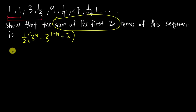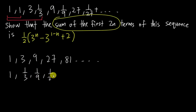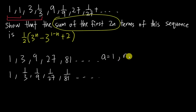I want to separate the sequence into two different subsequences. The first one consists of the odd-positioned terms: 1, 3, 9, 27, 81, and so on. The second consists of the even-positioned terms: 1, one-third, one-ninth, one-twenty-seventh, one-eighty-first, and so on. For the first subsequence, a equals 1 and r equals 3. For the second, a equals 1 and r equals one-third.